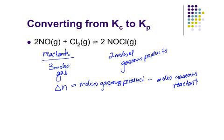Well, we just figured out how many moles we have. So we have 2 minus 3, or delta N is equal to negative 1.